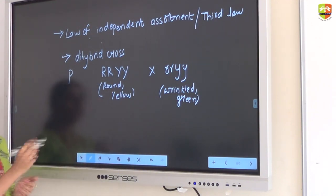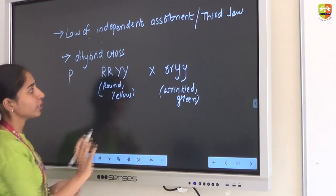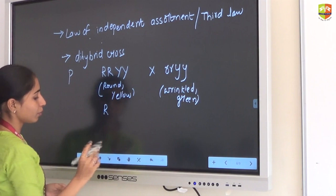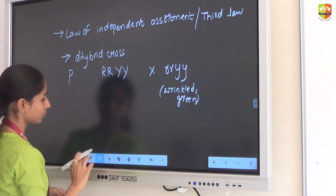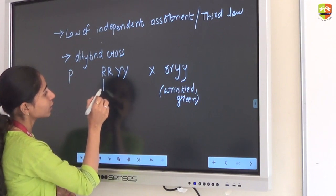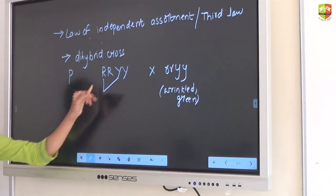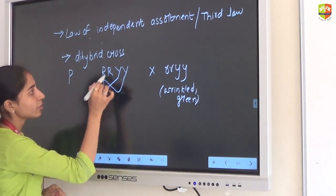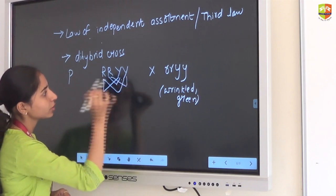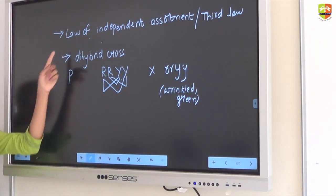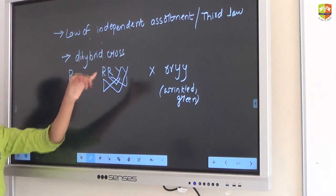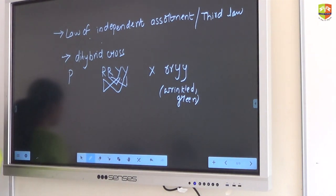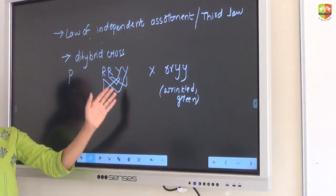Independent assortment means: we have two R's and two Y's here. When we take gametes, this R can go and cross — this R and this Y can combine. The same R can combine with another, or the other two can combine. So the name states law of independent assortment: each allele has its own independence. They assort independently and are not depending on each other. Anything can go and cross with any other allele.